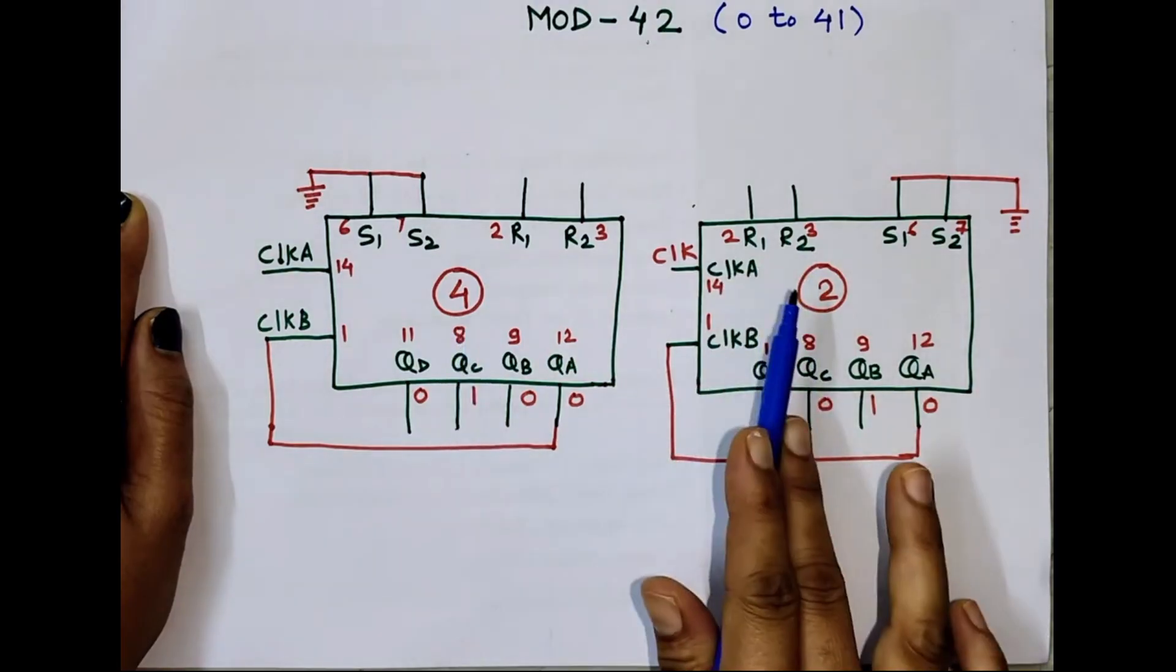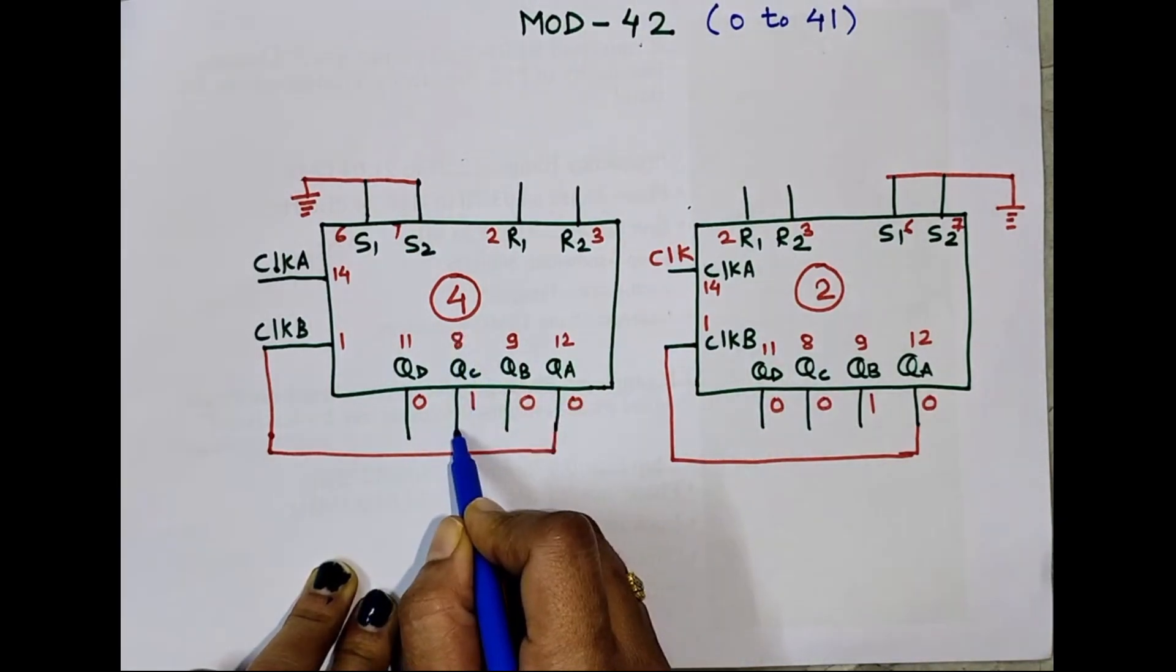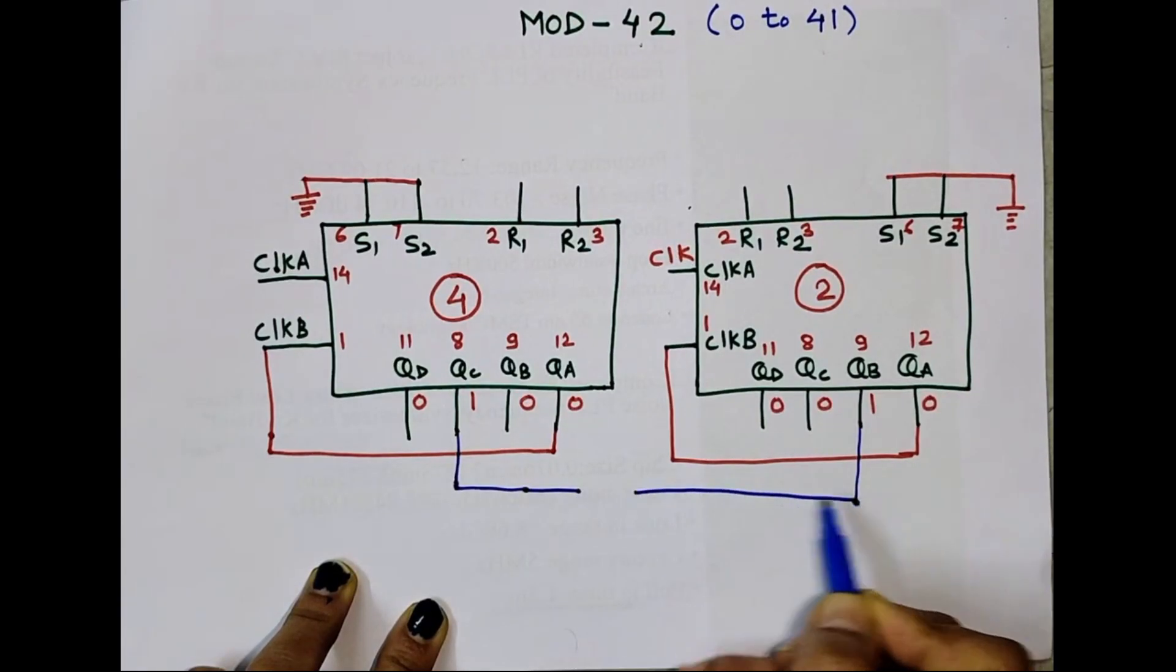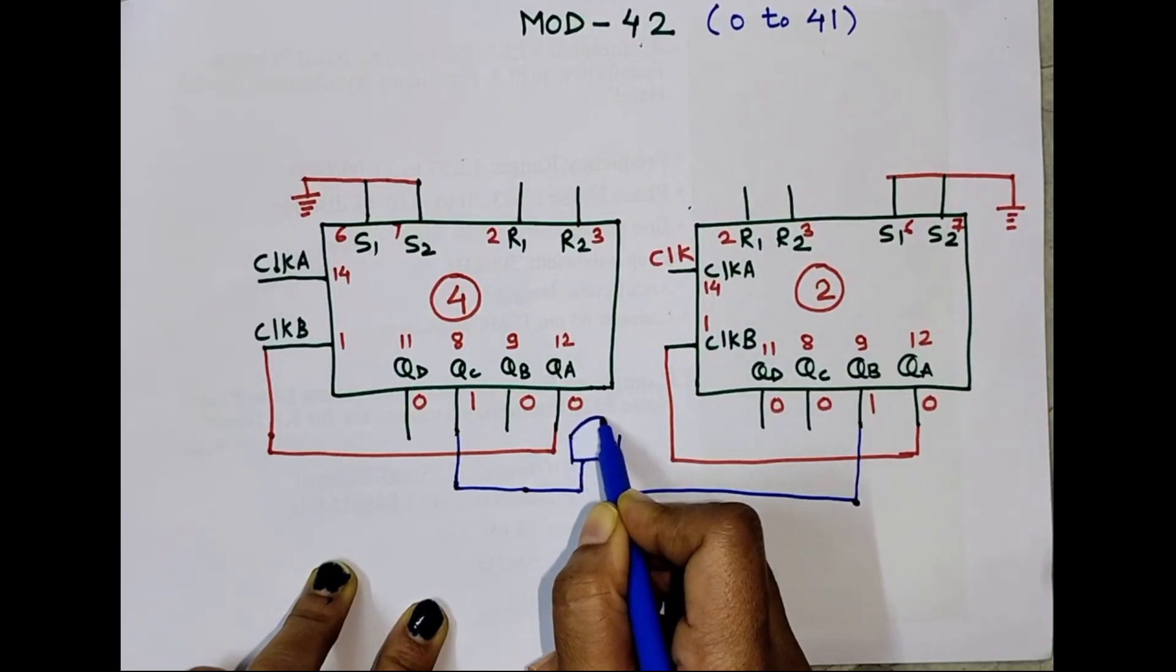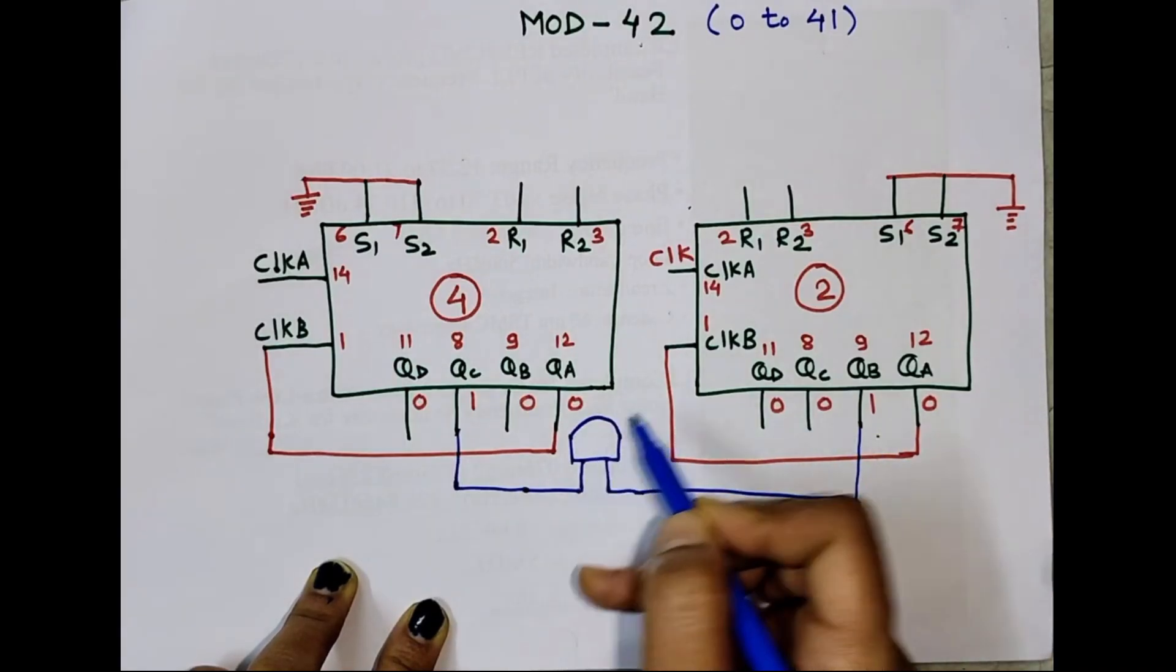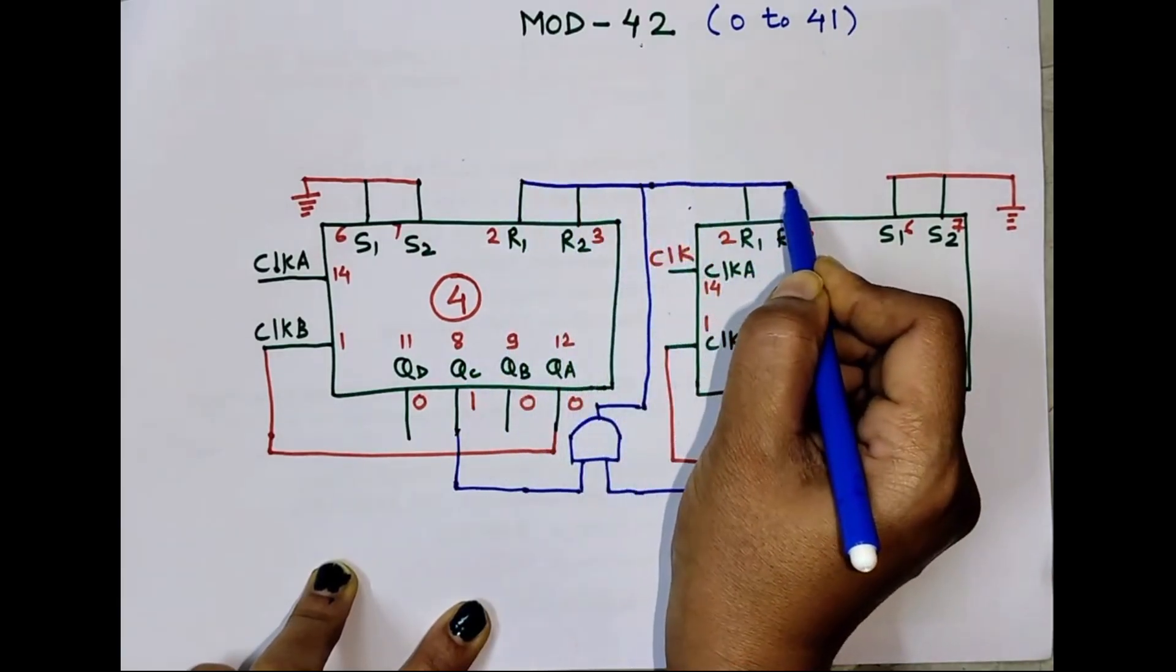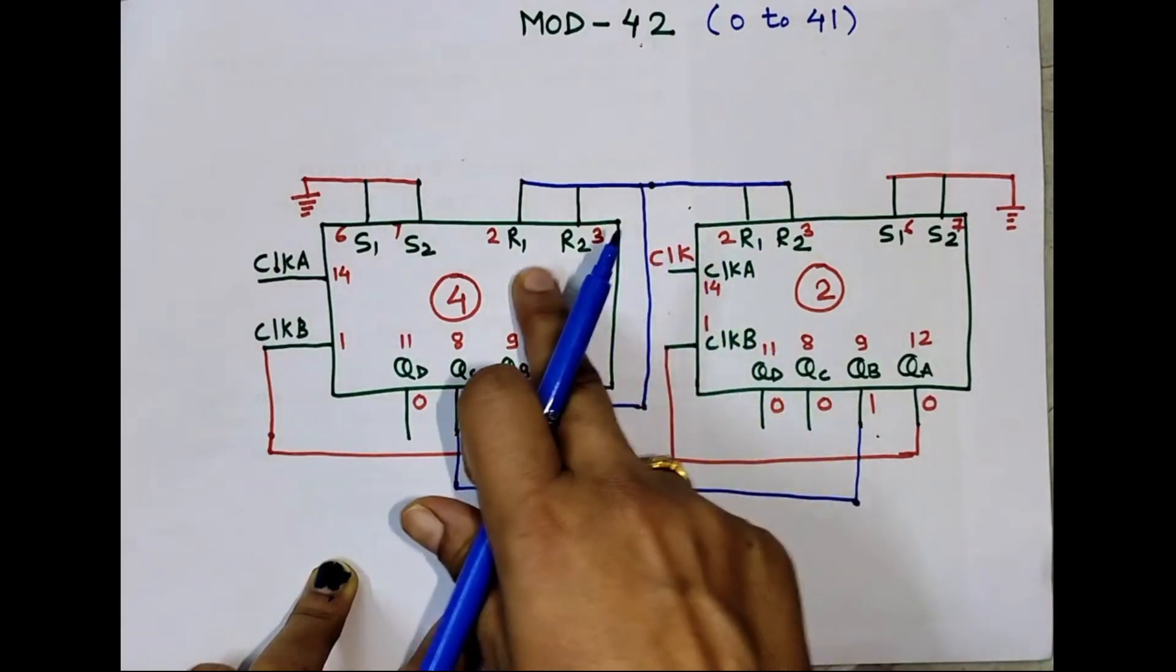One when this number will become 4 and when this number will become 2. So here I'll take QC because QC needs to be one for 4, and here QB must be one. I'll connect both of them to input of AND gate. So when QC will become one and QB will become one, output of this AND gate will become one. And I'll connect this output of AND gate to two reset pins. So as soon as this number will become 4 and this number will become 2, the reset pins will receive one.